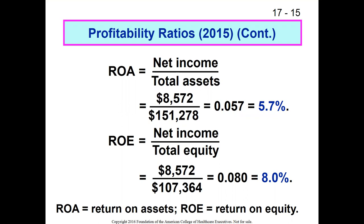Return on equity asks a very similar question, but you have to be careful about what's in the denominator. Here we ask how much net income did you earn relative to the total amount of equity invested in the organization. For a not-for-profit entity, equity would be net assets. So total equity would actually be net assets.